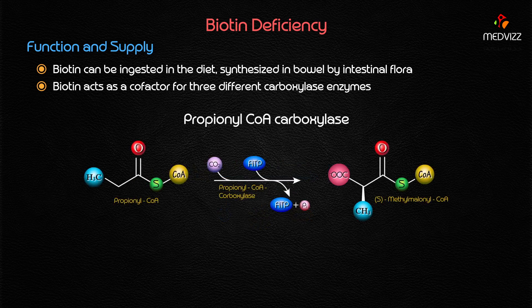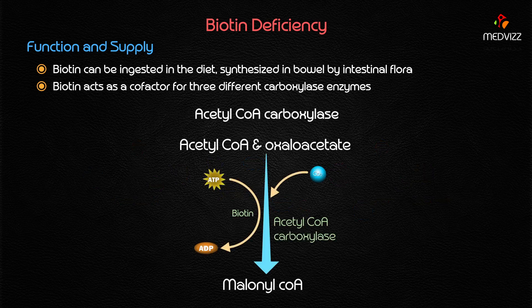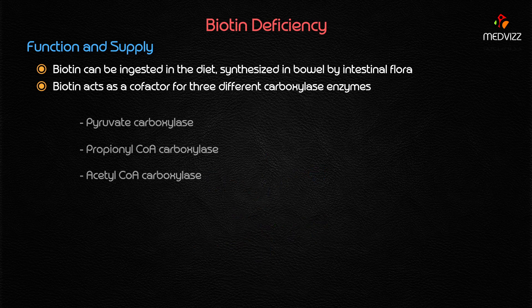Propionyl-CoA carboxylase is mainly involved in odd-chain fatty acid oxidation — it catalyzes the breakdown of propionyl-CoA, a product of beta-oxidation of fatty acid metabolism, into methylmalonyl-CoA. Acetyl-CoA carboxylase is a key rate-regulating enzyme that converts acetyl-CoA into malonyl-CoA in fatty acid biosynthesis.